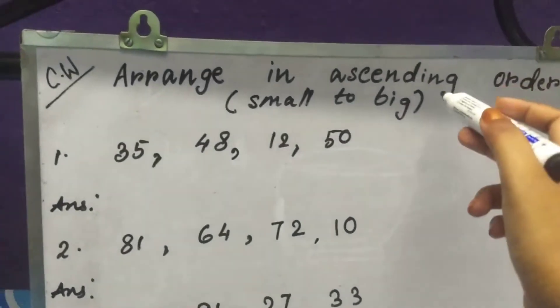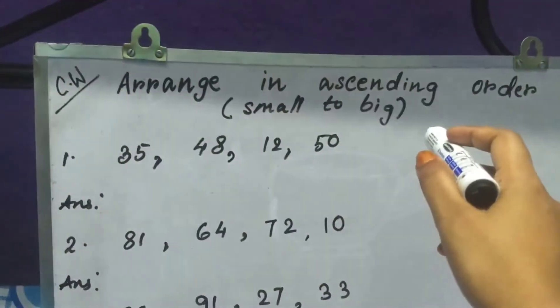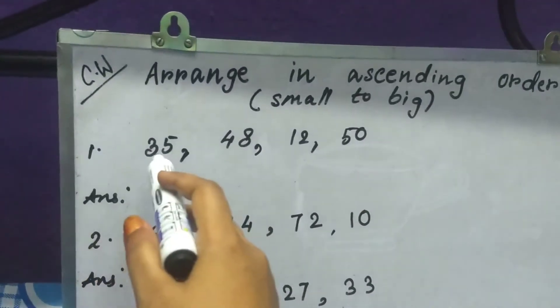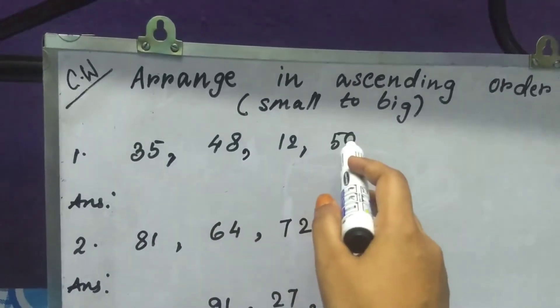Arrange in ascending order. Ascending order means small to big. See number 1: 35, 48, 12 and 50.